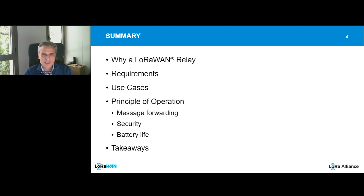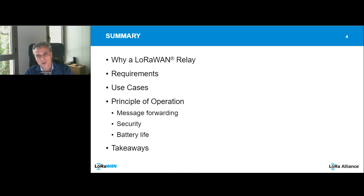The first part of the presentation will provide insights on the business rationale that drove the activity and definition of the specification itself. We will see why the Alliance converged on the idea that Relay was indeed needed, what the main requirements are, and what use cases are enabled or will benefit from this additional feature. Then Brice will describe the principle of operation of the Relay, addressing message forwarding, security, and power consumption.